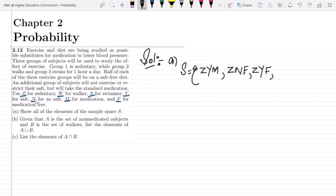The second group here is for the walkers. Walkers will either take the salt or not. If they are taking salt, it is Y. If they are not taking any salt, it will be N. In both of these cases, they will be free from any medication, so it will be WNF and WYF.